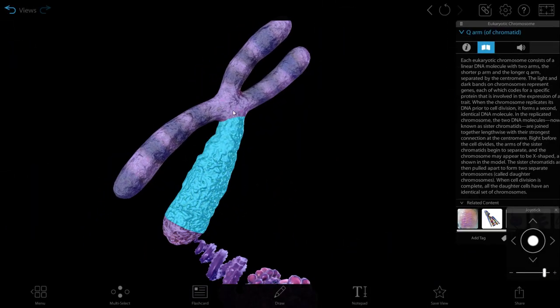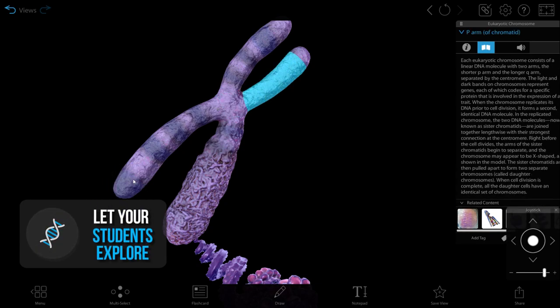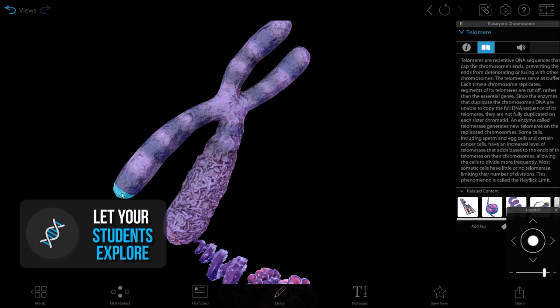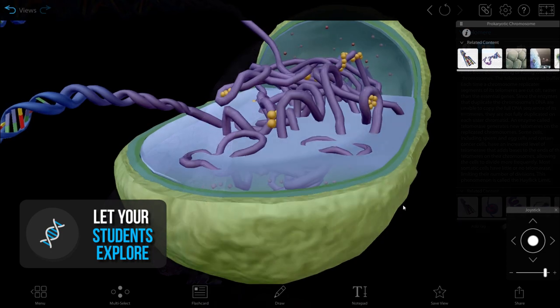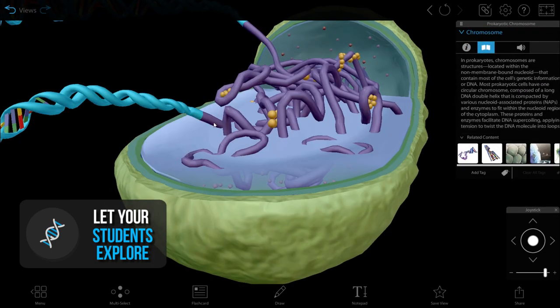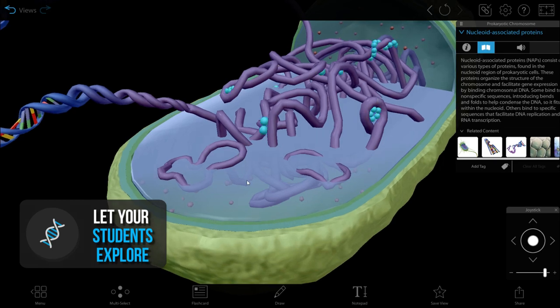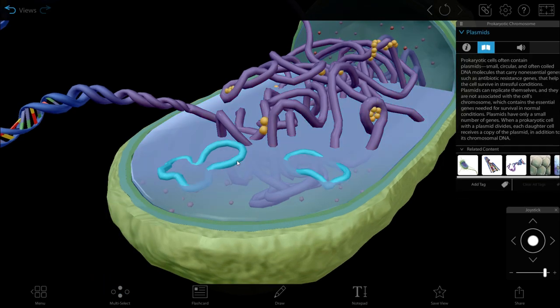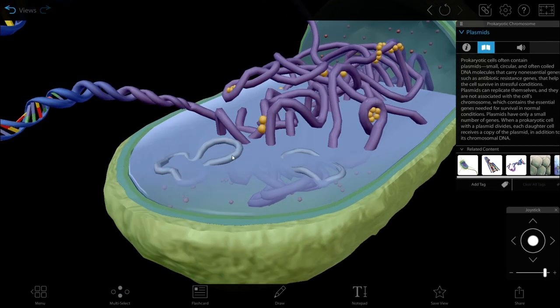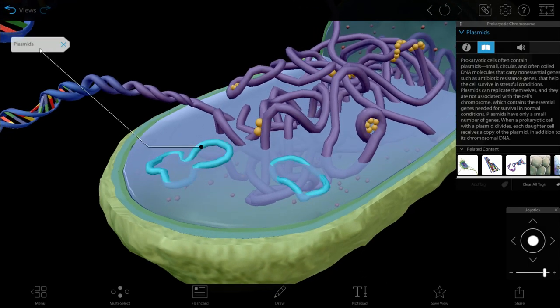To show students the differences between prokaryotic and eukaryotic chromosomes, have them navigate to the prokaryotic and eukaryotic models. Ask students to explore the models and create their own Venn diagrams that list their similarities and differences. Students will learn about these differences through tactile learning as they manipulate the models and they will walk away with notes to study from.